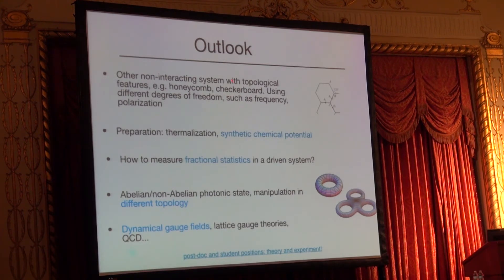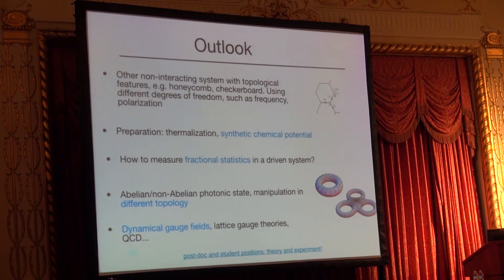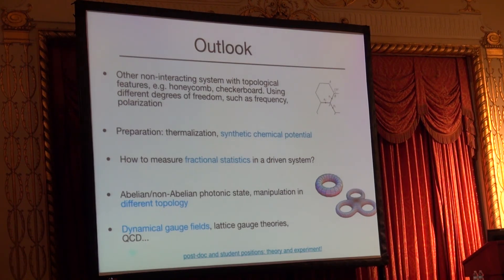For the outlook: most condensed matter systems that we know have a phase diagram with a nice chemical potential and interaction. But chemical potential is zero for a photonic system because photons just leave. So we have to find ways to synthesize this chemical potential. This is one of the core questions we have to deal with when translating condensed matter models into photonic models. We also have to simulate thermalization.